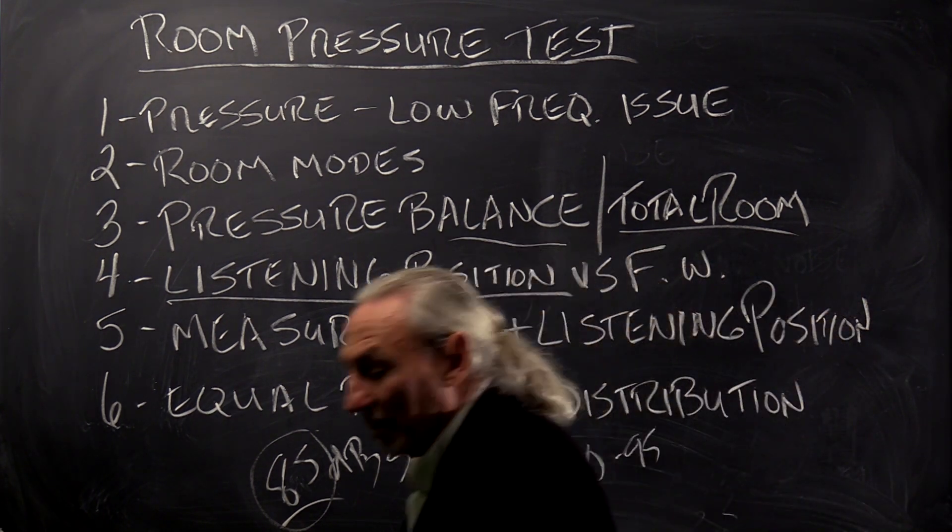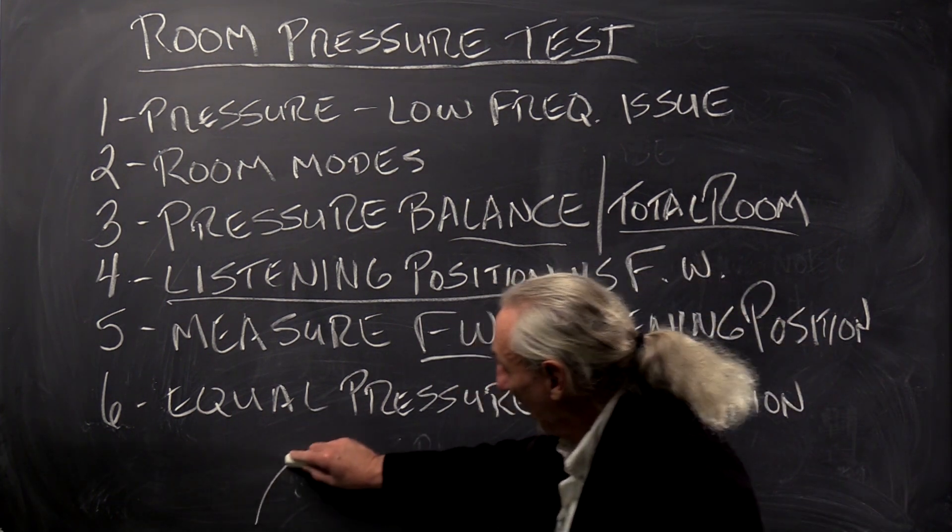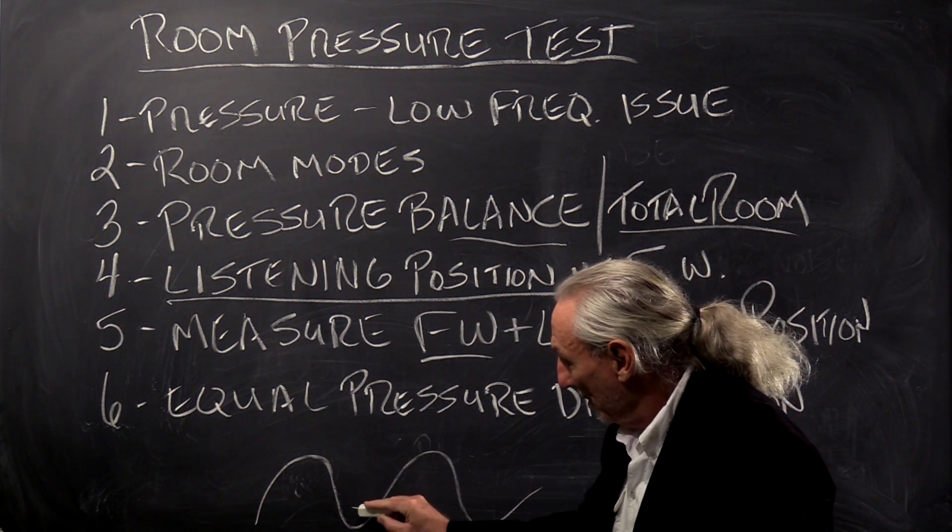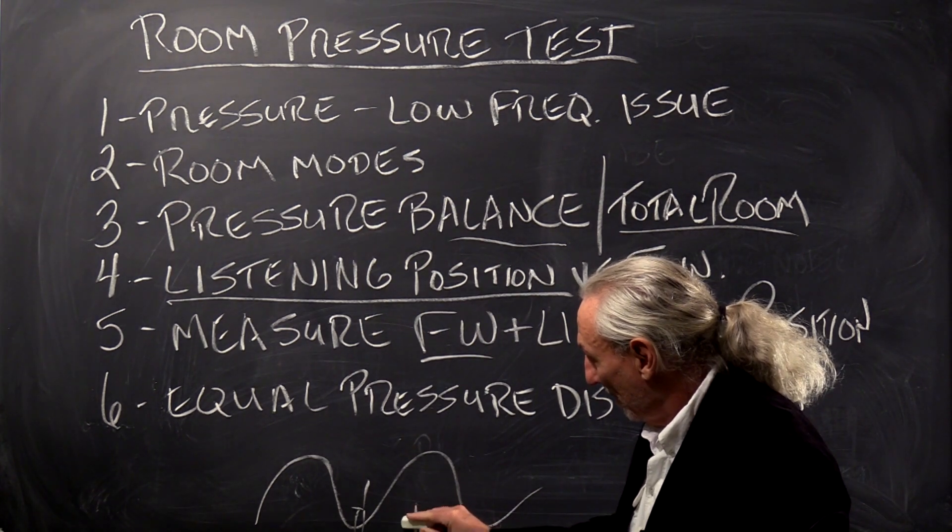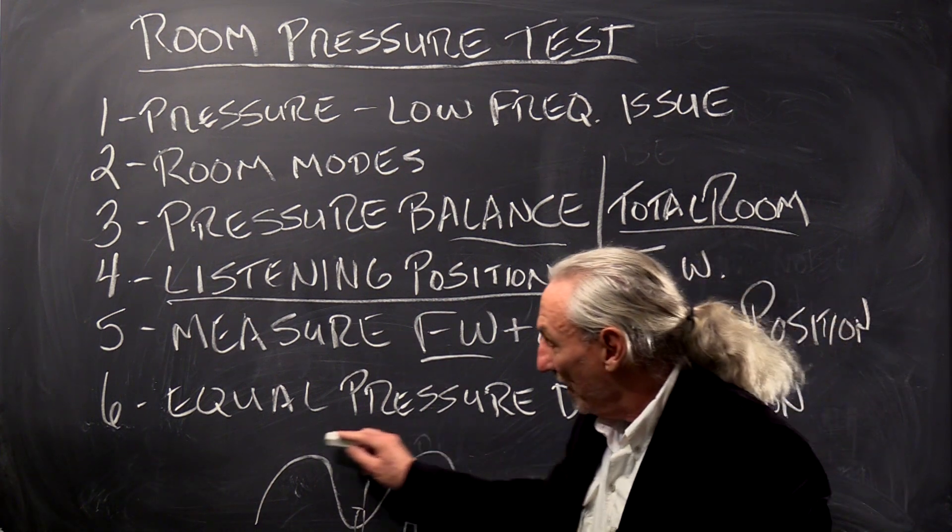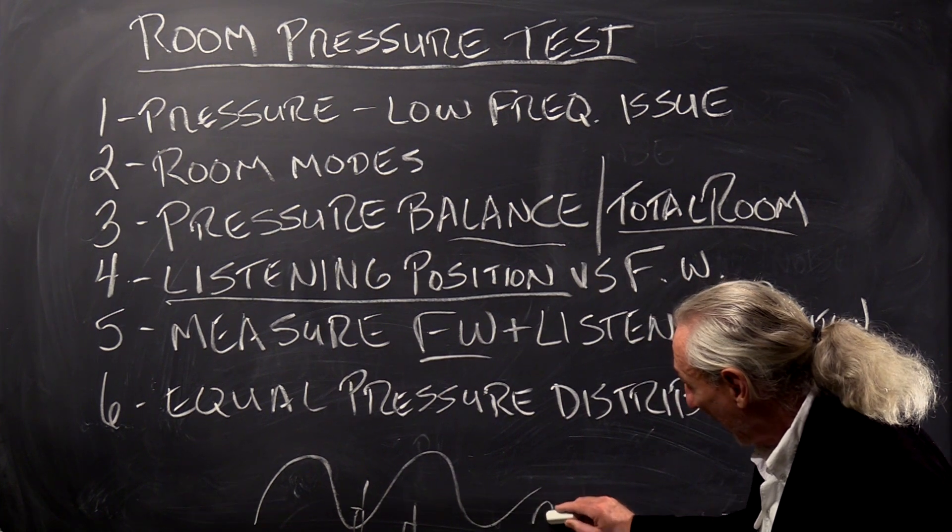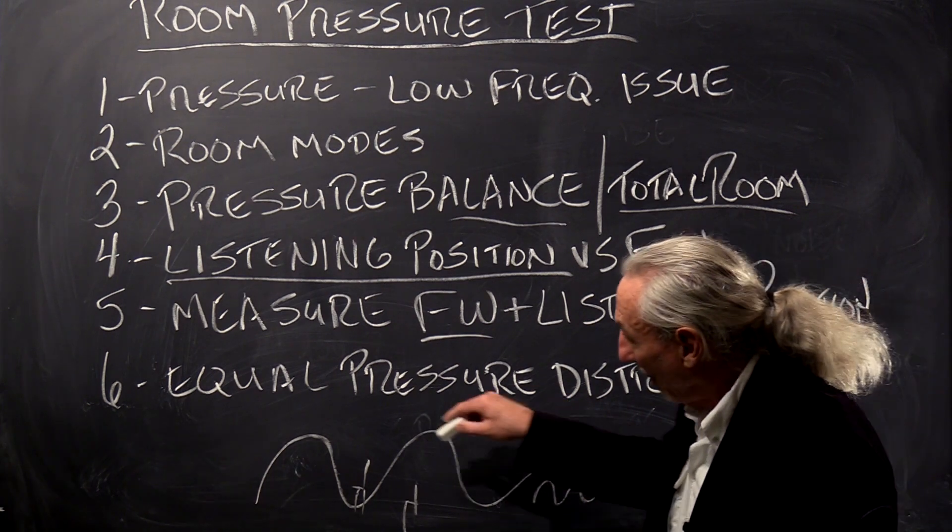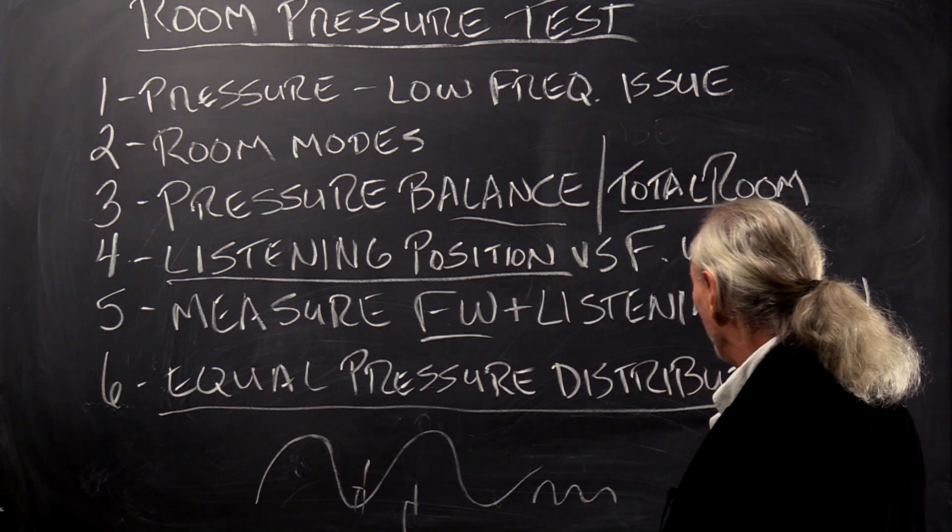And you have to remember that low frequency energy oscillates throughout the room. So if you're sitting here or you're sitting here, that's an unbalanced situation. So with room treatment, we try to do that. Also with room size and volume, we try to minimize these gaps so they're smaller and closer together. So that's the goal here, always to have a balance and equal distribution of pressure throughout the room.